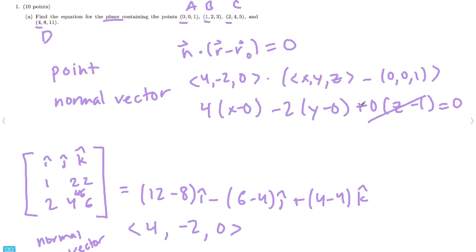Since both of these numbers are 0, they just go away. So, we end up with 4x minus 2y equals 0. And, then, if we wanted to, we could divide by 2, to get 2x minus y equals 0. And, that is the equation of the plane containing these points.